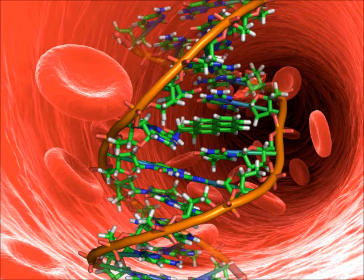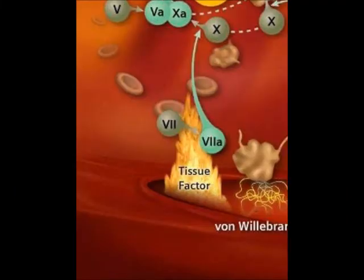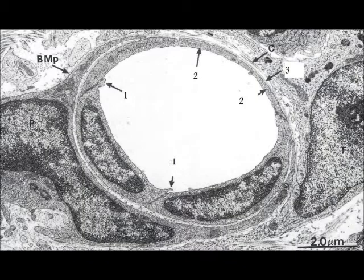The Coagulation Cascade can be separated into three pathways: the Intrinsic Pathway, also known as the Contact Pathway; the Extrinsic Pathway, also known as the Tissue Factor Pathway; and the Common Pathway. When initiated, the coagulation cascade will begin by following either the Intrinsic or Extrinsic Pathway. Both of these pathways will eventually meet and thus begin the Common Pathway, hence the name Common Pathway.